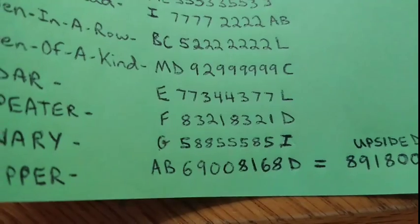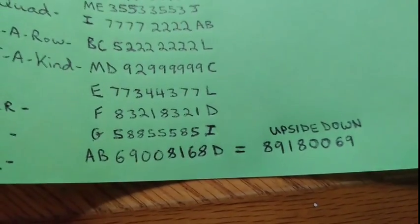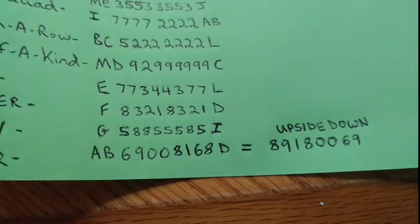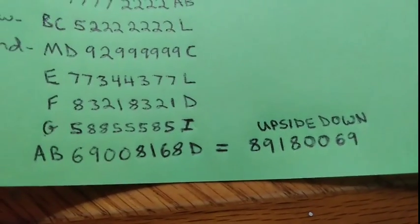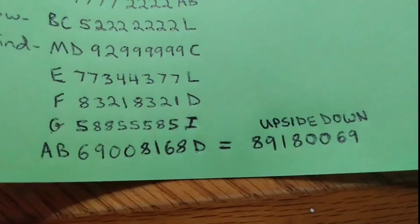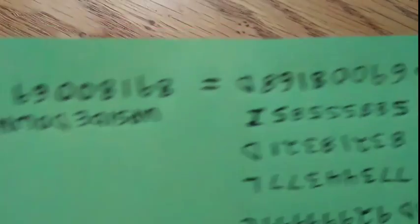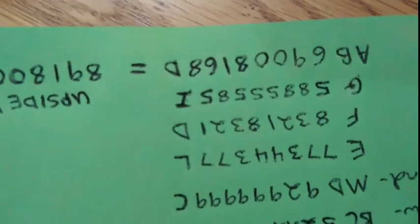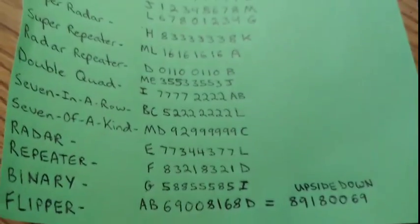Then we have a flipper — whatever number you have, if you flip the bill upside down and it still reads the same number. For example: 6, 9, 0, 0, 8, 1, 6, 8 — flip it upside down and it reads 8, 9, 1, 8, 0, 0, 6, 9. There are a couple other things too, like birth dates if you can find a birth date bill, and star notes. Those are a few things to look for, and each one has a different value.